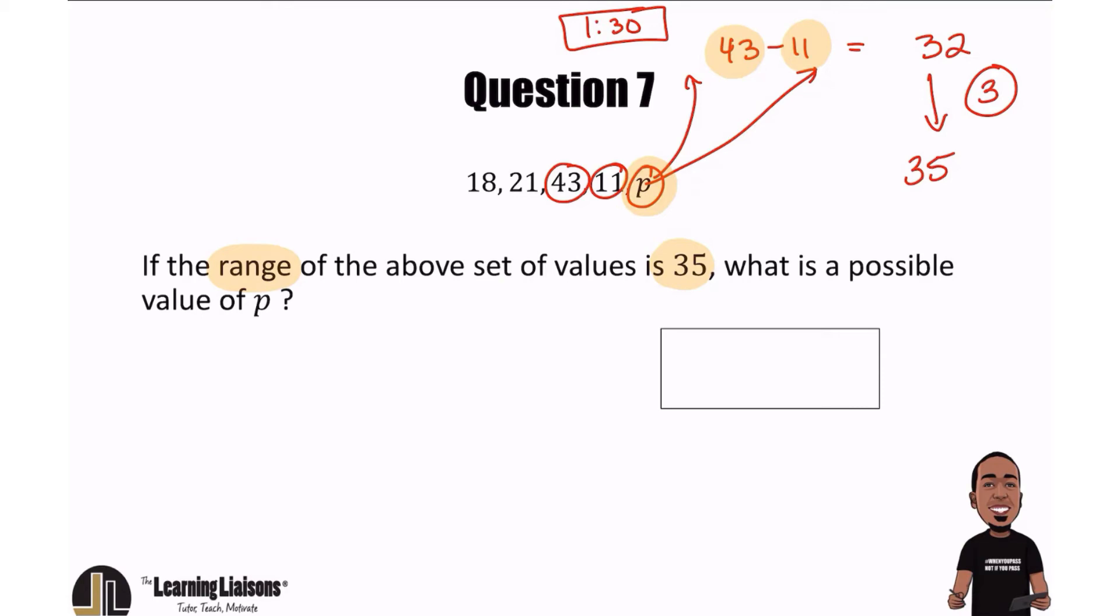Here's what I mean. If P was 46, then the range would be 46 minus 11, which is 35. There's one.